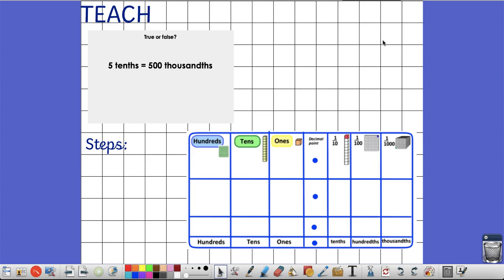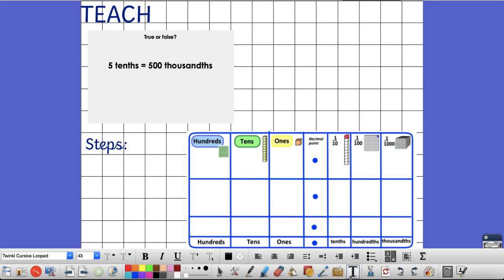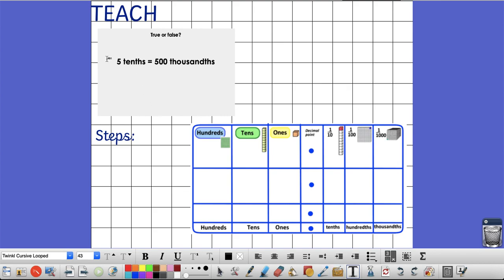So let's have a question. Does 5 tenths equal 500 thousandths? So let's have a go at trying it. So the first step I would do is to work and put down what 5 tenths is in my place value grid. So 5 tenths, if I put 5 here, that equals 5 tenths.